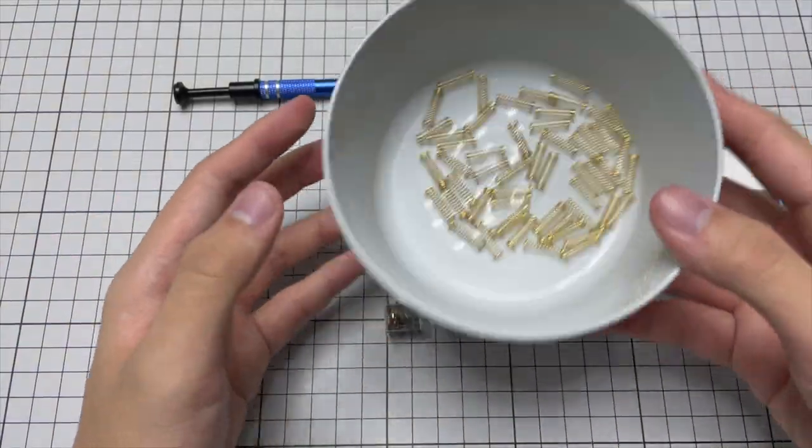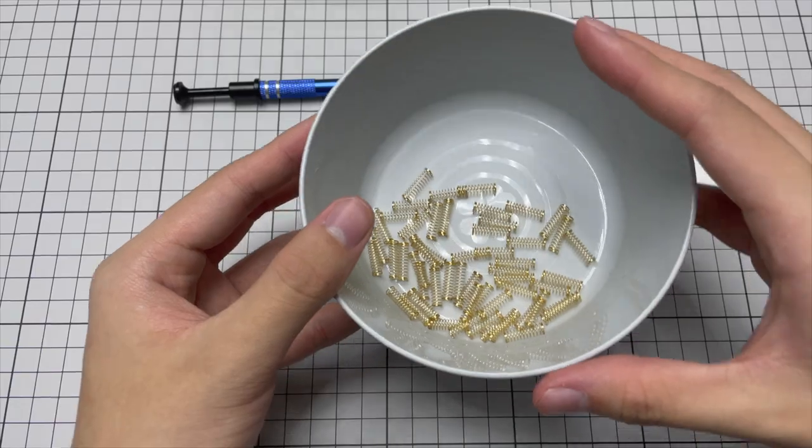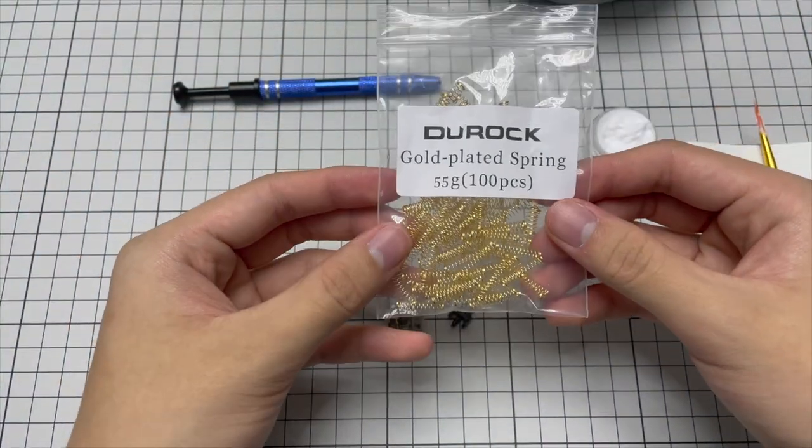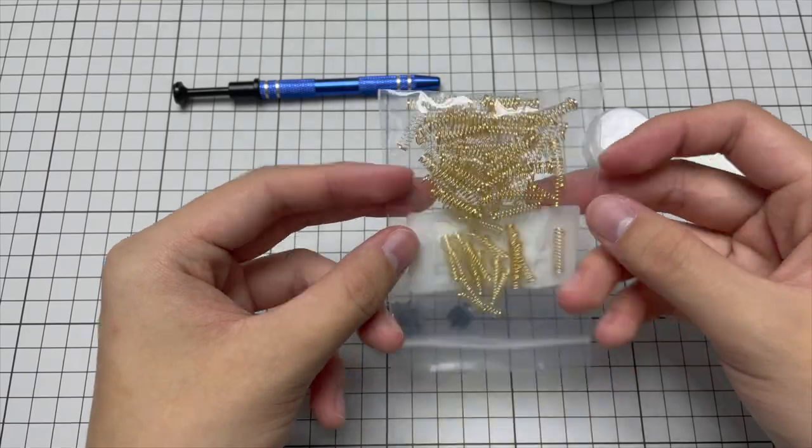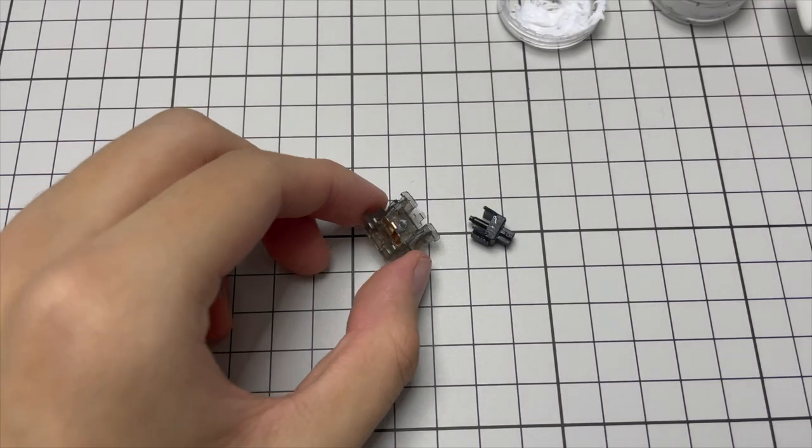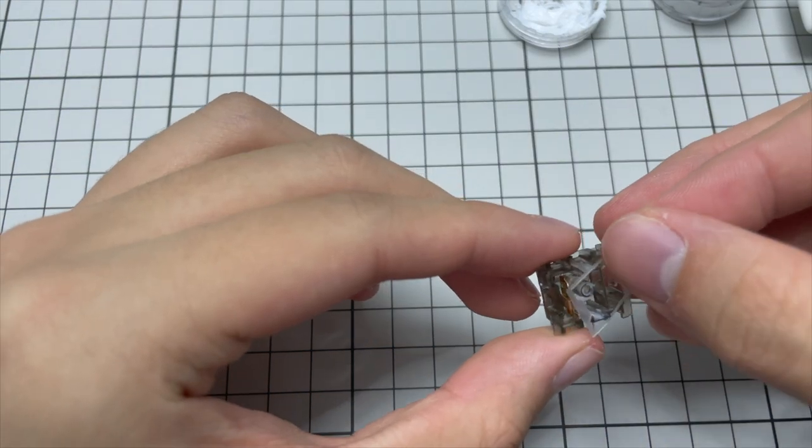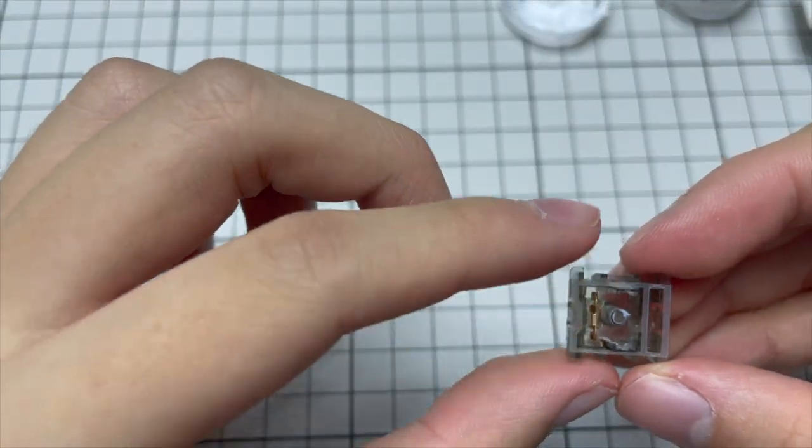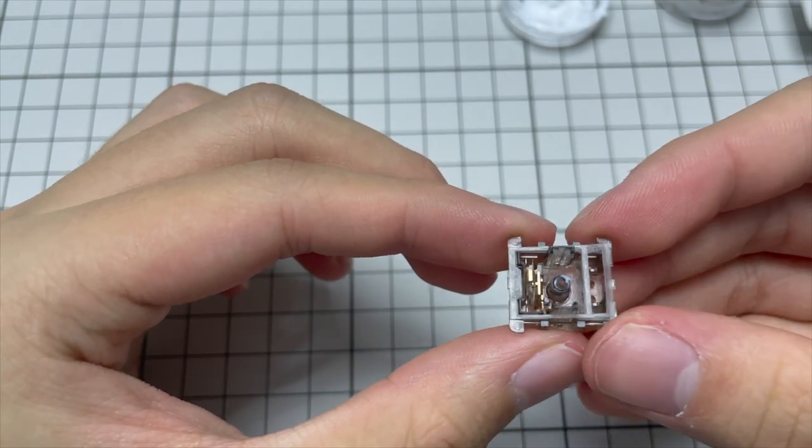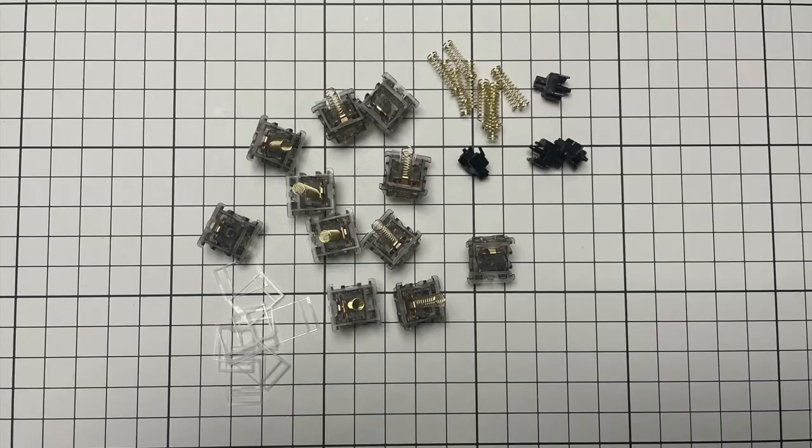There is nothing wrong with the 62g spring inside the Durock L7 switch, but I do enjoy using a lighter switch so I'll be replacing all the springs with these 55g Durock gold plated springs. Before I assembled the switches, I added a film between each of the switches. A film is a thin sheet of rubber that sits between the two halves of the switch to reduce any twisting in the joint since the switch is opened.